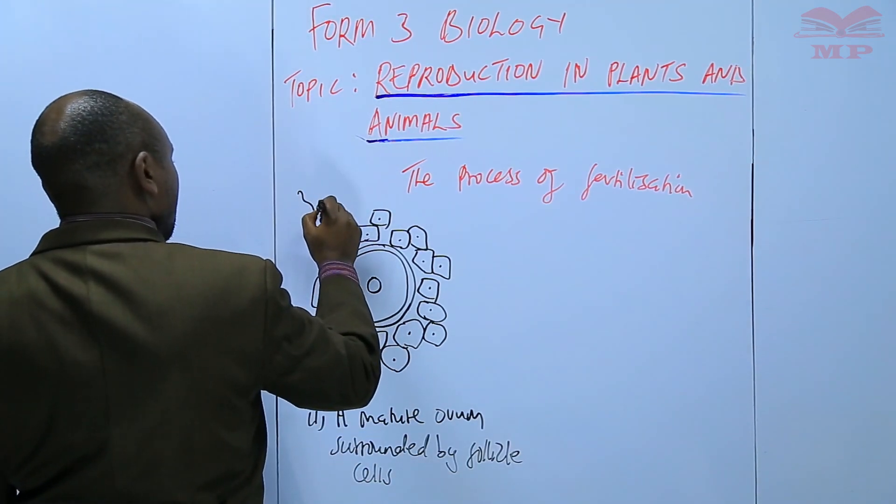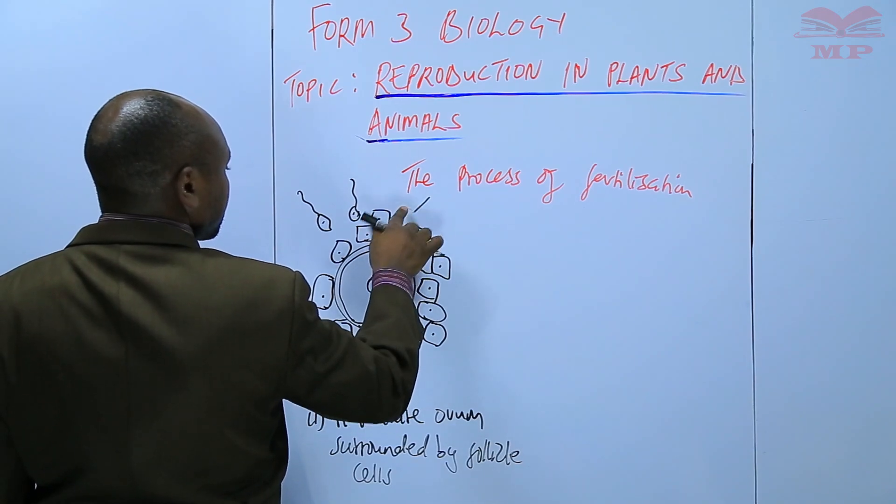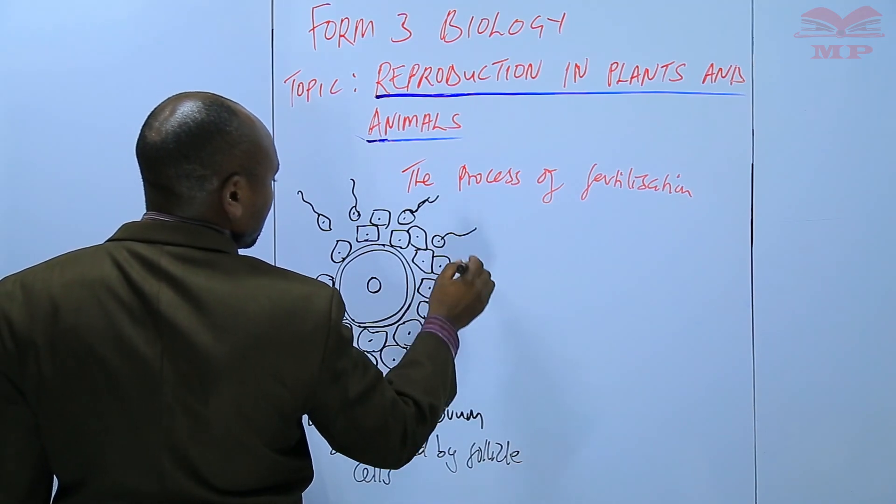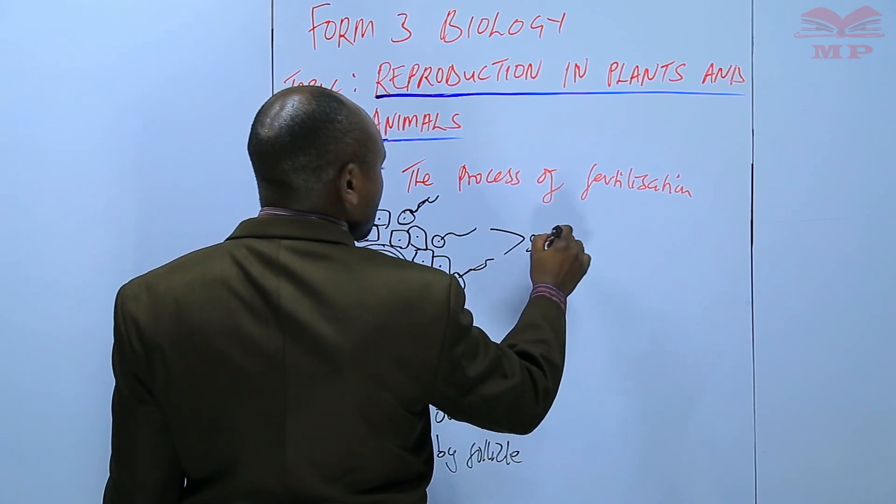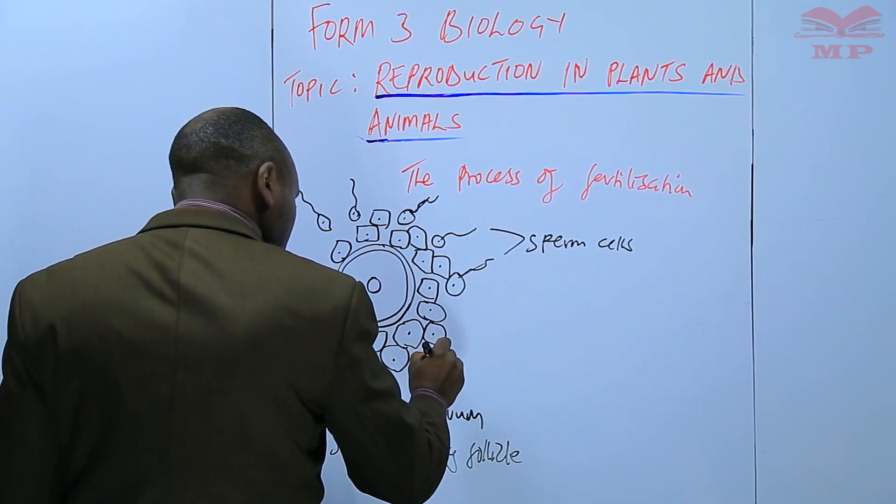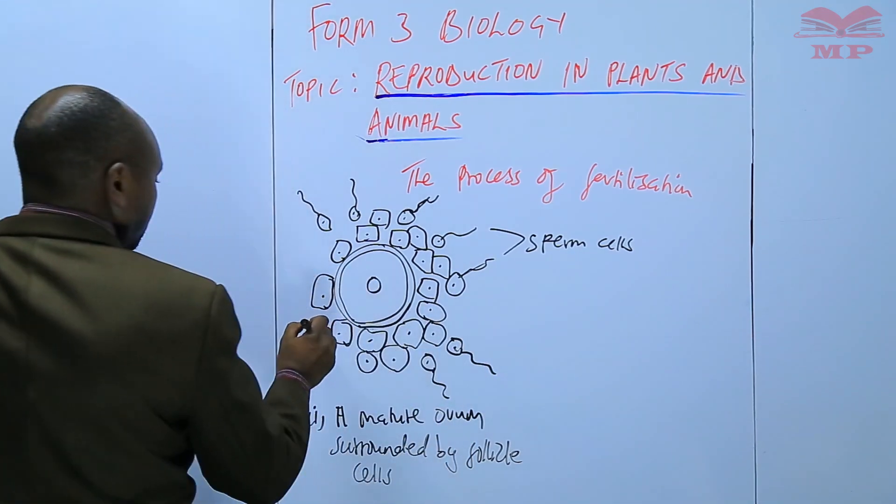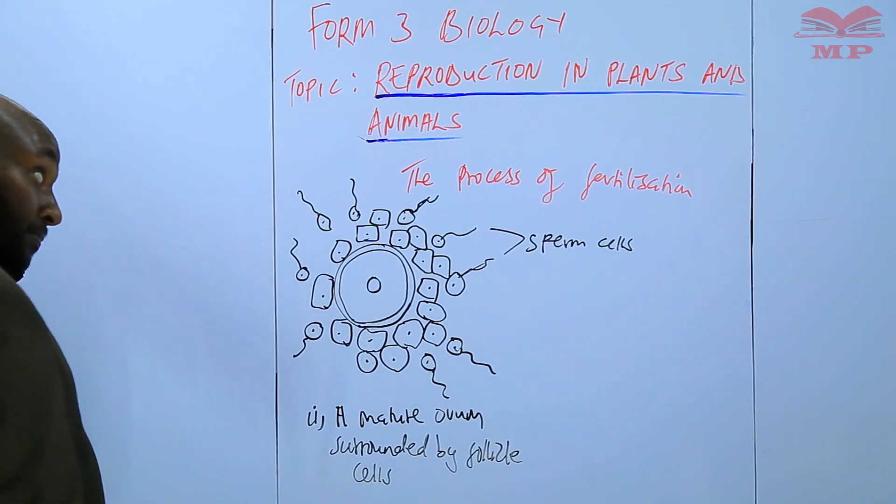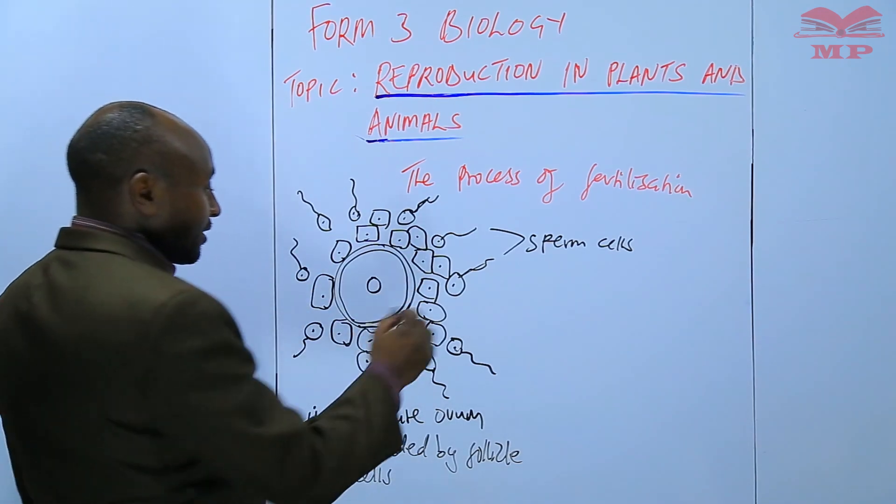And then we have the sperm cells moving towards, these are the sperm cells in all the directions. The sperm cells produce the lytic enzymes that scatter the follicle cells.